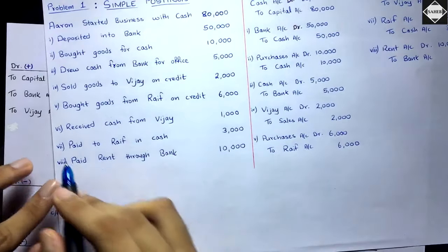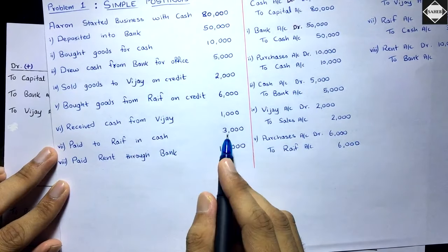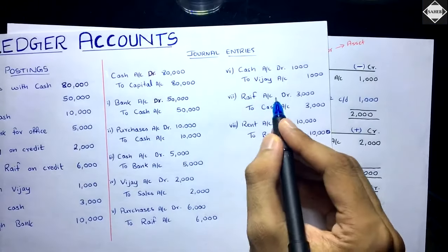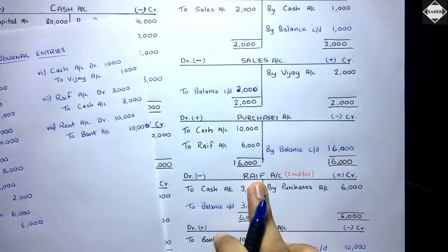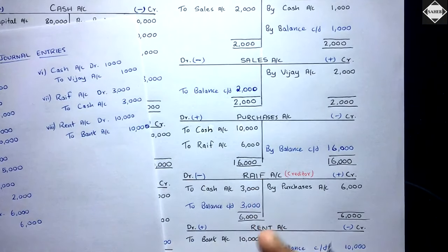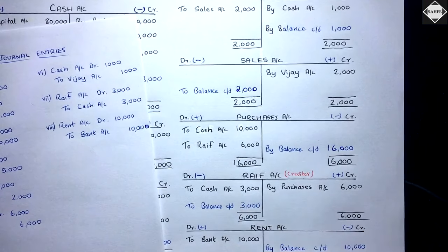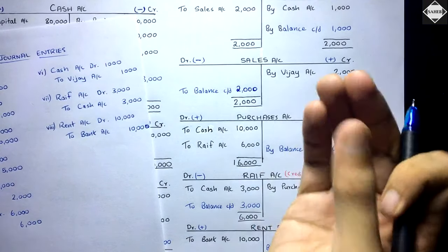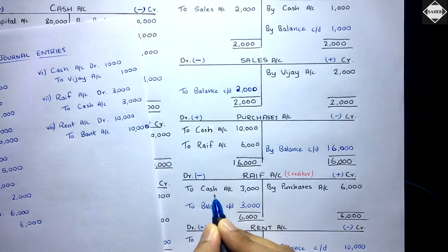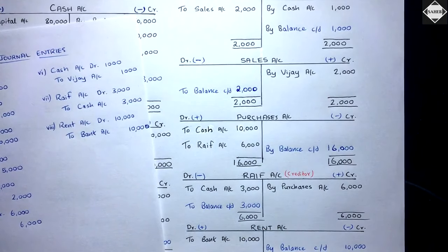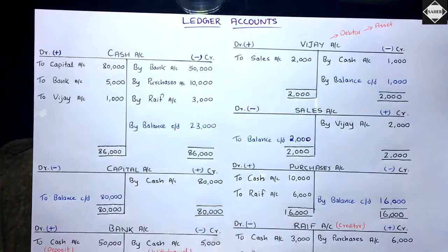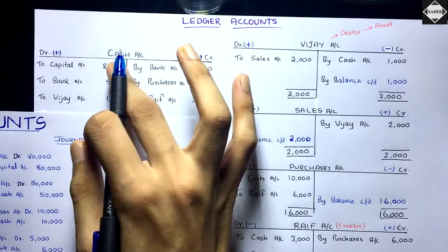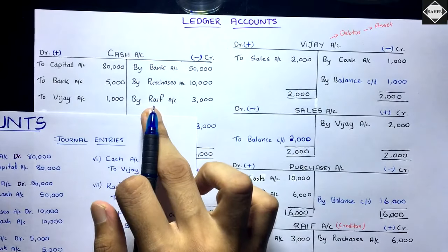Next: paid to Rife in cash 3,000. Journal entry: Rife Account debit 3,000, to Cash Account 3,000. In the Rife Account, the liability has decreased because we paid — we no longer owe that 3,000. So: Rife Account debit, to Cash Account 3,000. Then in the Cash Account, cash has decreased because we paid, so: Cash Account credit, by Rife Account 3,000.